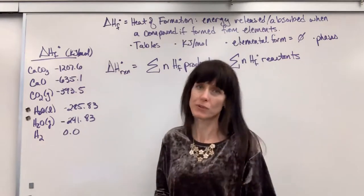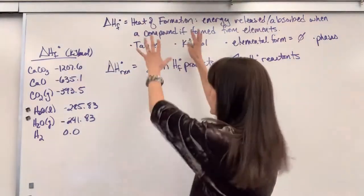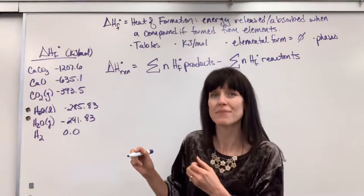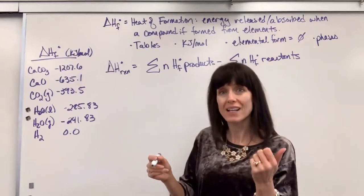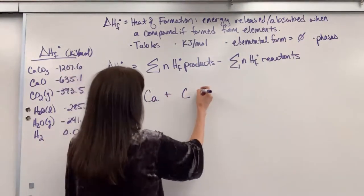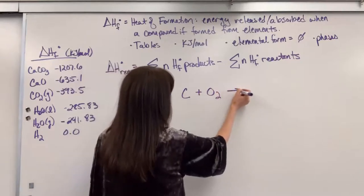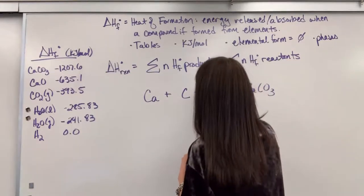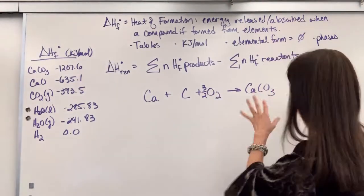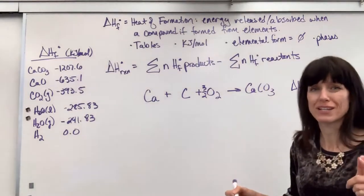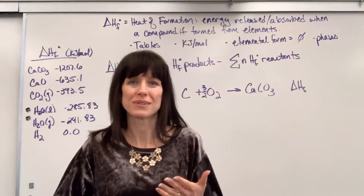For example calcium carbonate says negative 1207.6 and the unit on this is kilojoules per mole. And I want to help you interpret this. What it means taking that definition and reading the table. That means if we form calcium carbonate from its elements like this. Calcium plus carbon plus oxygen to form calcium carbonate. And I'll balance. So this will put three halves oxygen right there. The delta H for this. And we put a subscript F for formation.